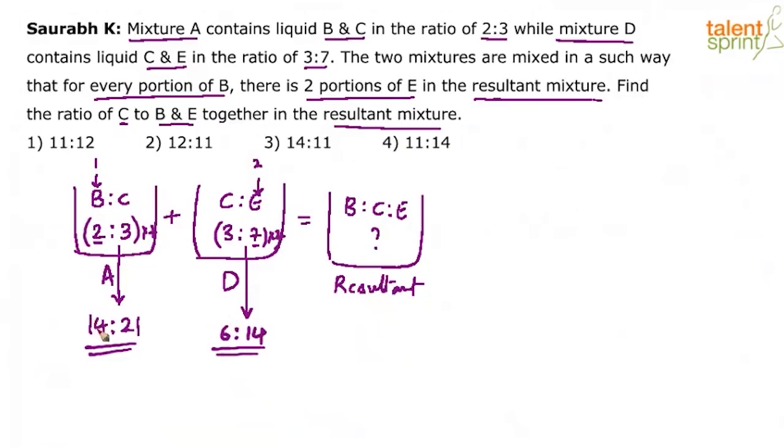So now what happens? You know that B has got 14 parts and C here has got 21 parts. In the second mixture, C has got 6 parts and E has got 14 parts. Now, it will be easy for you to go by the given point. What is the point? For every portion of B, we take 2 portions of E. For every portion of B, we take 2 portions of E. Now, how do you do it? See, if you see currently here, we have got 14 parts of B and we have got 14 parts of E.